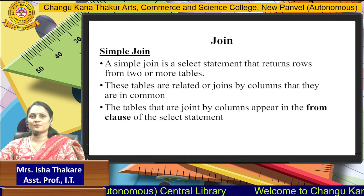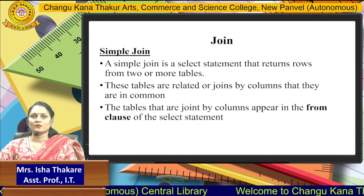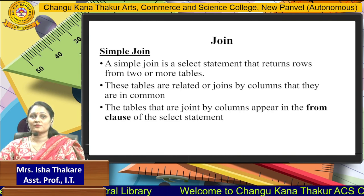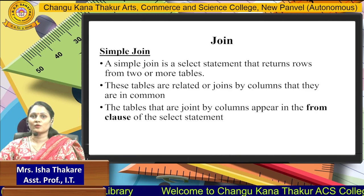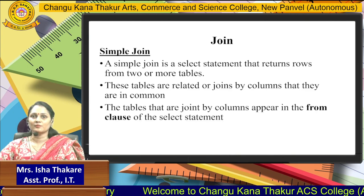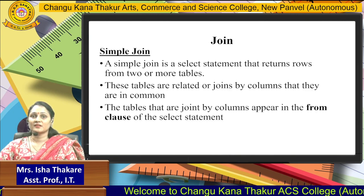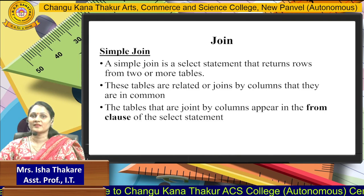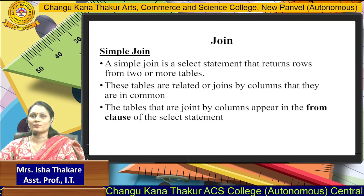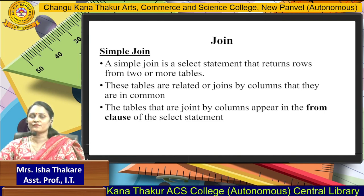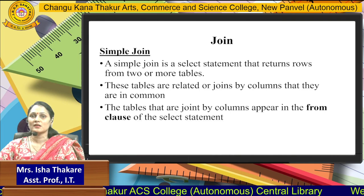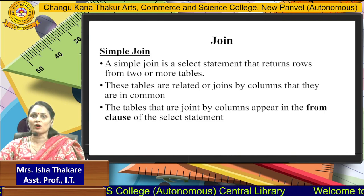A simple join is a SELECT statement that returns rows from two or more tables. These tables are related or joined by a column that they have in common. The necessary condition for joining two tables is that at least one column should be common in both tables.